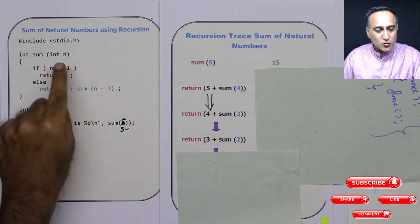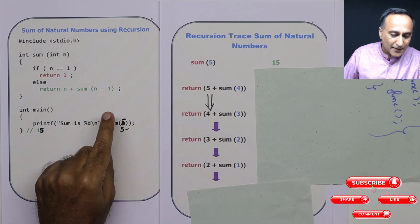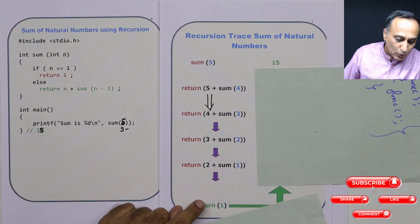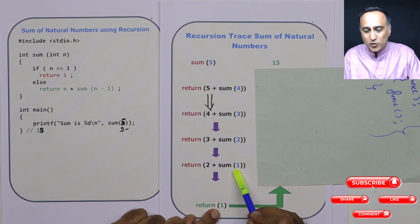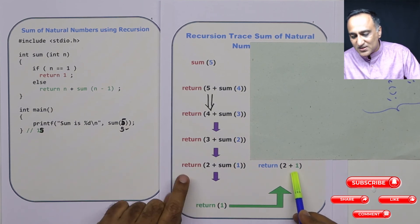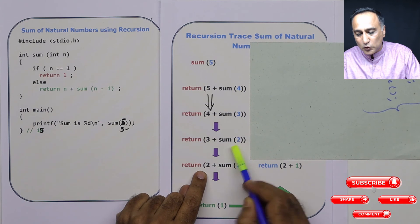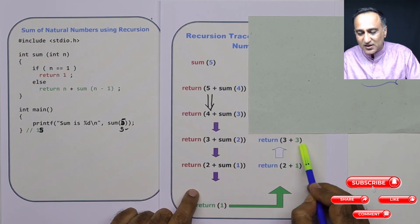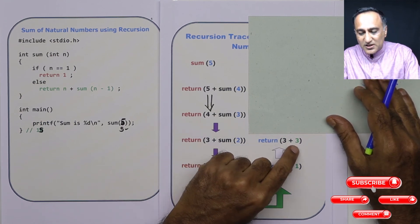Next, n is 2, and 2 equal to 1 is false. So I come here: return 2 plus sum of 1. Sum of 1 is now called, n value is 1, and 1 equal to 1 is true, so I am returning 1. Once I return 1, that means I know the sum of natural numbers from 1 to 1, which is 1. So I replace this sum of 1 with 1, and this return now becomes 3. This 3 represents sum of 2 plus 1, so this 3 represents sum 2. Sum of 2 can be replaced with 3 because sum of 2 happened to be 2 plus 1, which is 3.